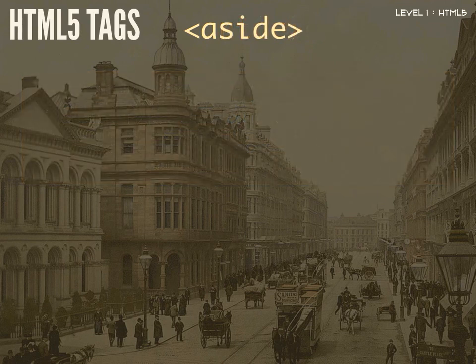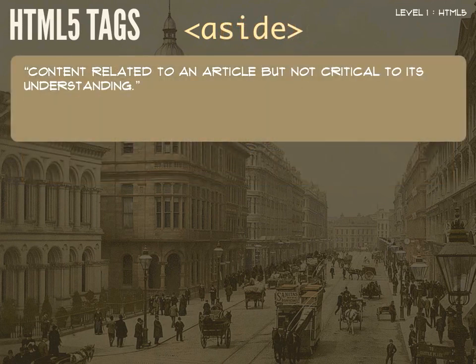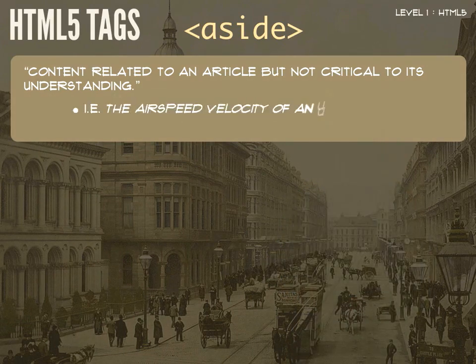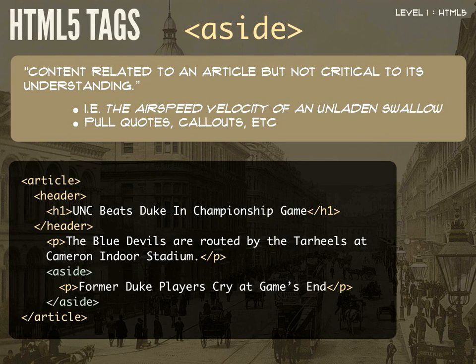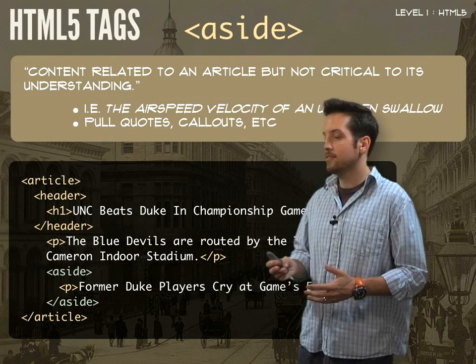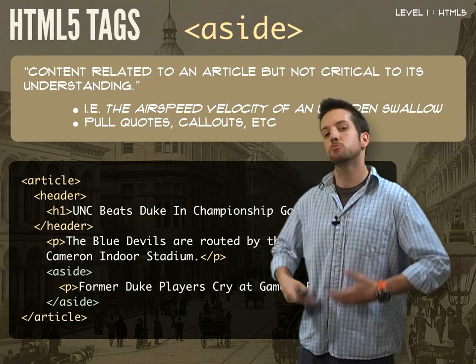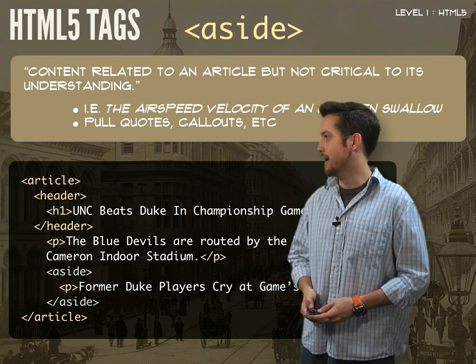So the next tag is the aside tag. The aside tag is defined as content related to an article, but not critical to its understanding. This might be those golden nuggets of useless information that you bring up at dinner parties, such as the airspeed velocity of an unladen swallow. It could also be pull quotes, callouts, those kinds of things. So going back to our example — our article UNC beats Duke in the championship game — we can include an aside within this article that says 'former Duke players cry at game's end.' This isn't essential to understanding the actual article, but it's just information that helps spruce it up.